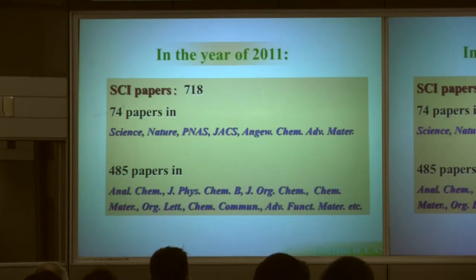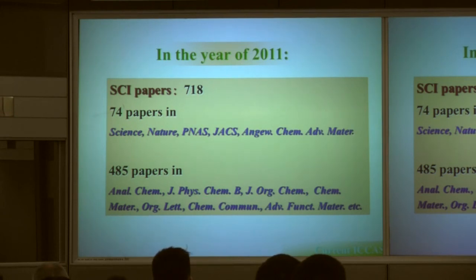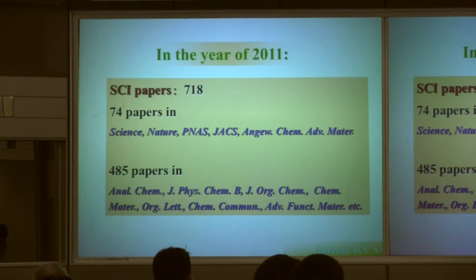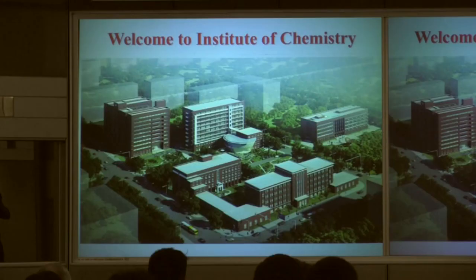In 2011, the institute published about 700 papers, with approximately 10% published in top journals such as Science, Nature, JACS, Angewandte Chemie, and Advanced Materials, and about 50% in journals such as Analytical Chemistry, JPC, JACS, Chemical Communications, and Advanced Functional Materials. Welcome to the Institute of Chemistry — we moved to a new building two years ago, and a new building is planned for next year. Thank you very much.